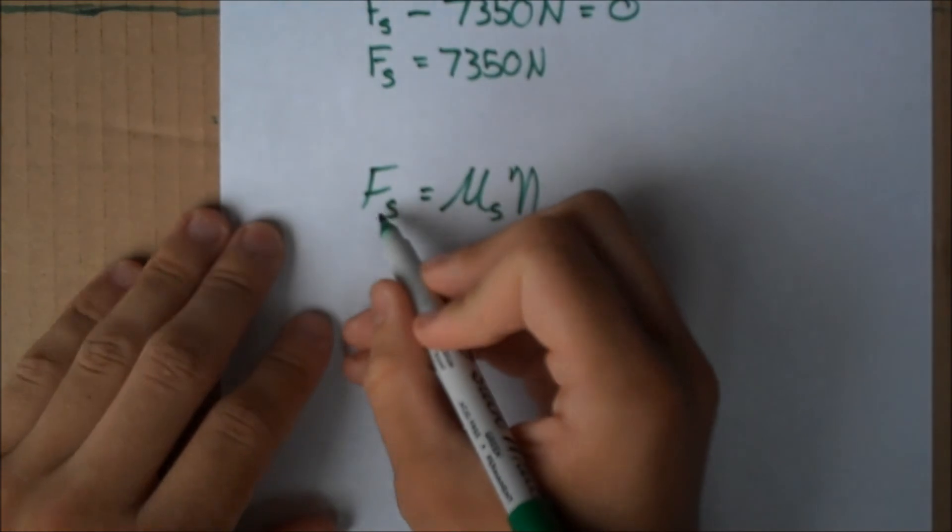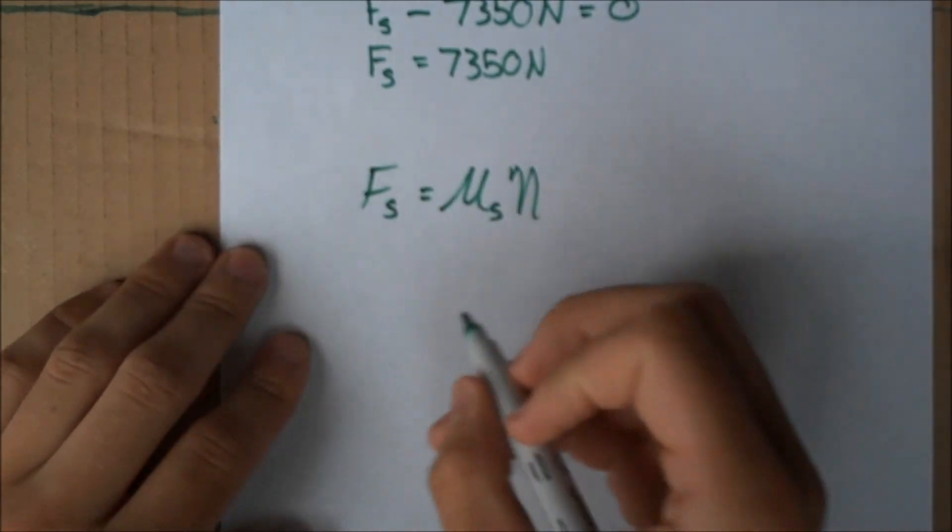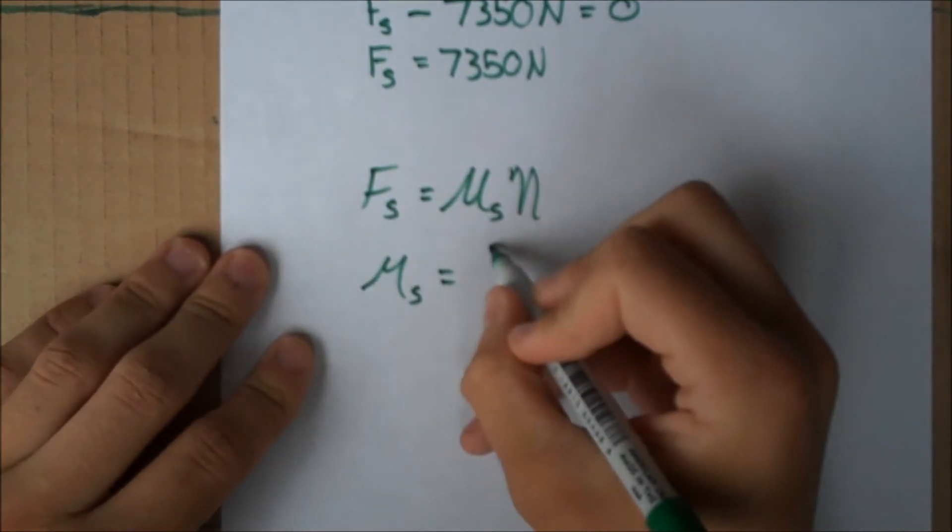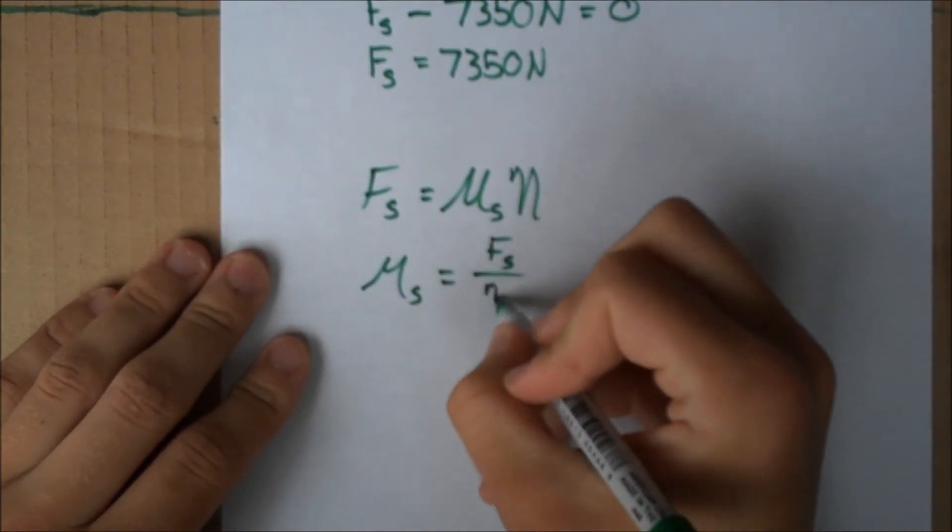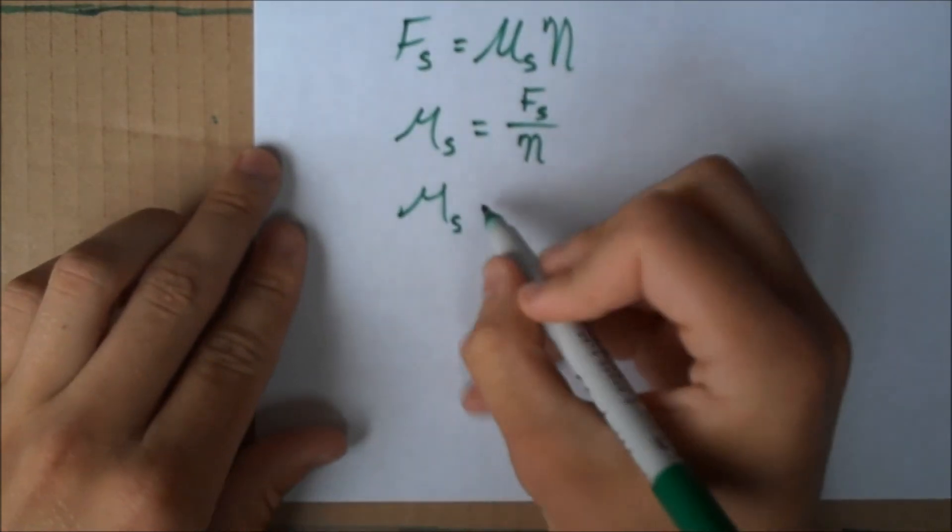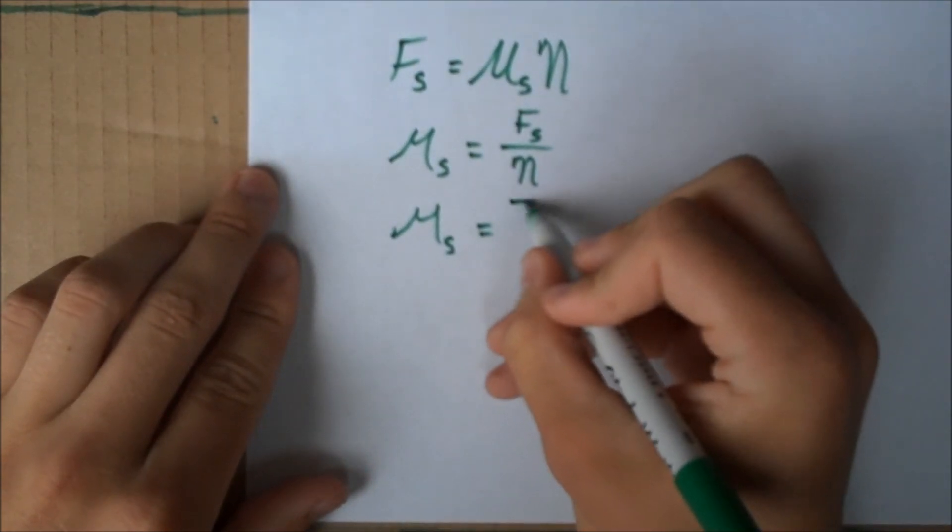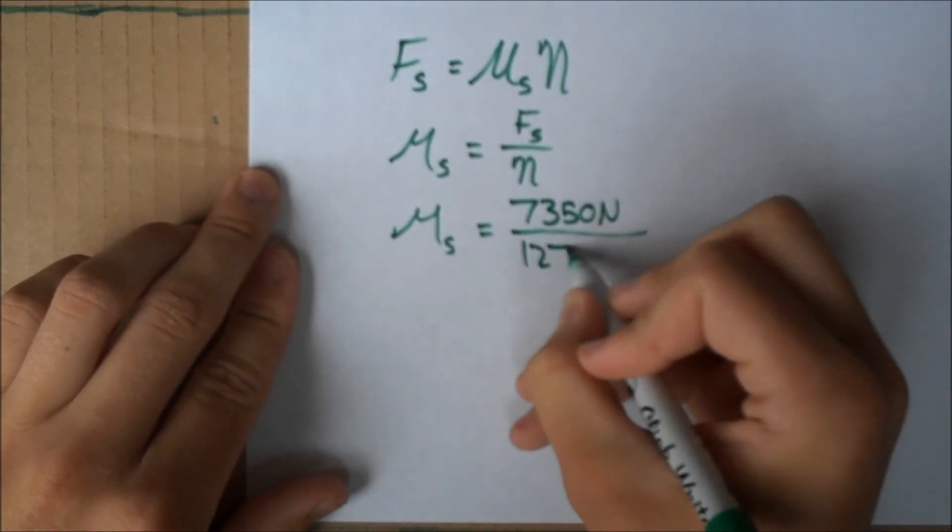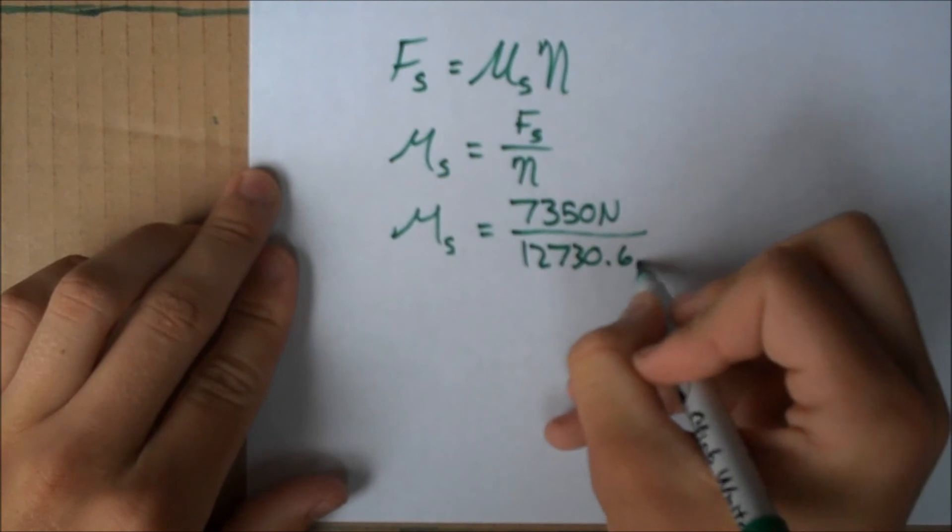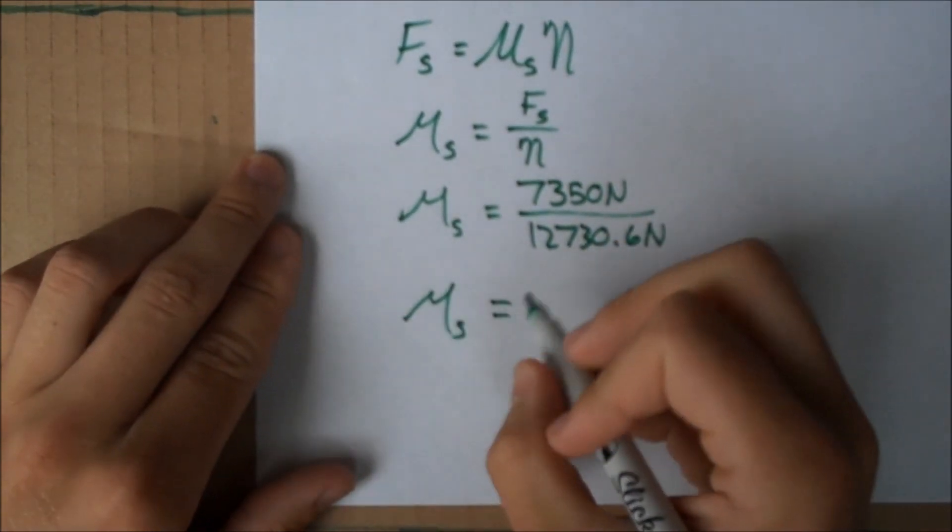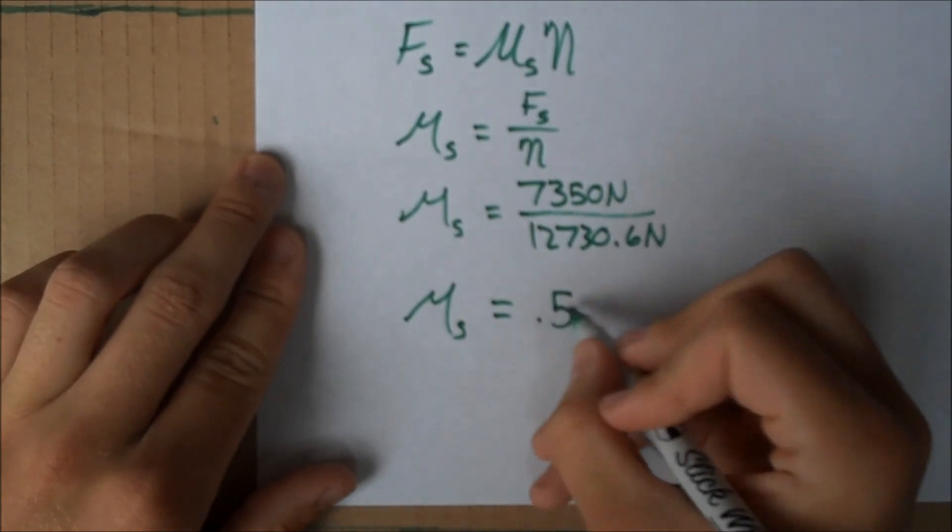We have already solved for both the force of static friction and normal force, so we'll be able to plug this in easily. We get mu_s equals 7,350 newtons over 12,730.6 newtons. And when you solve that out, you get mu_s equals 0.577.